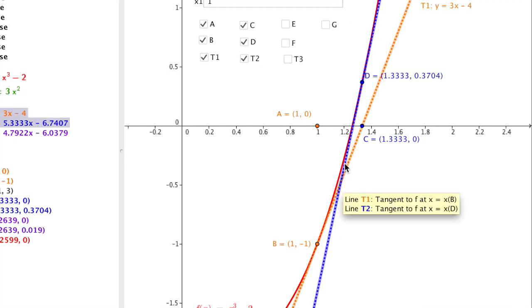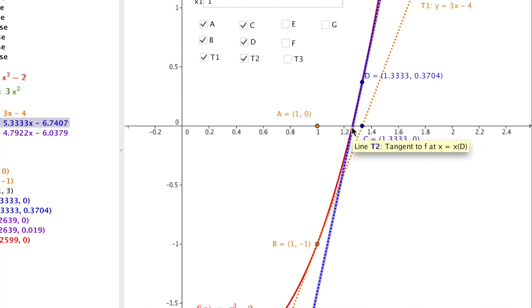And of course notice that just in two iterations, we are really closing in on the approximation of the x-intercept.